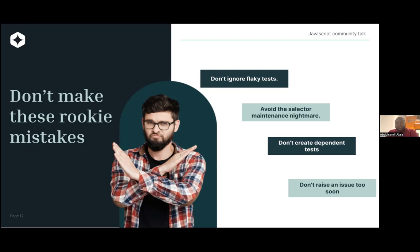You also want to avoid selector maintenance nightmares. You want to make sure your selectors are clear. For example, if your selector when writing a test ensures that a specific text is present, but then the content or marketing team changes that content, you may have forgotten there's a test ensuring that text is there. Before you know it, the test will be failing for no reason, just because you changed the content. Instead, if you're testing something that can change, you could use something like a label, ID, test ID, or some other means of selection.